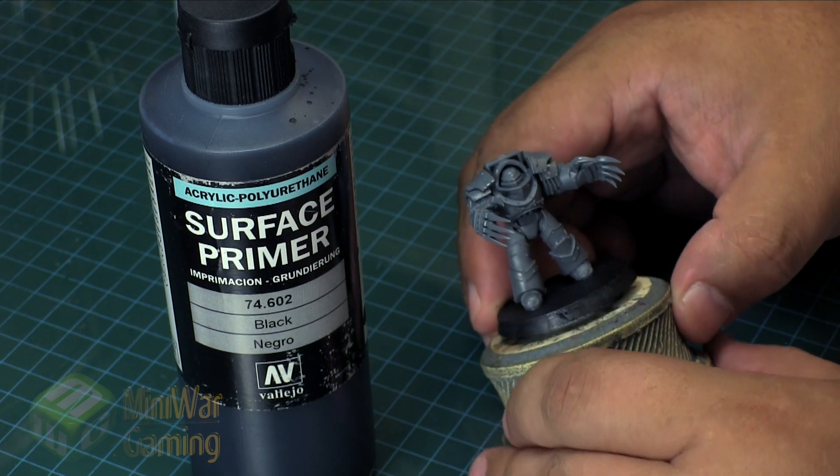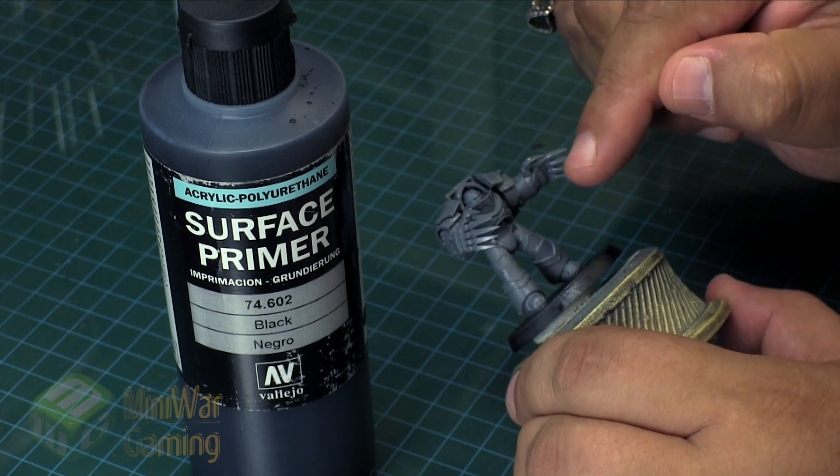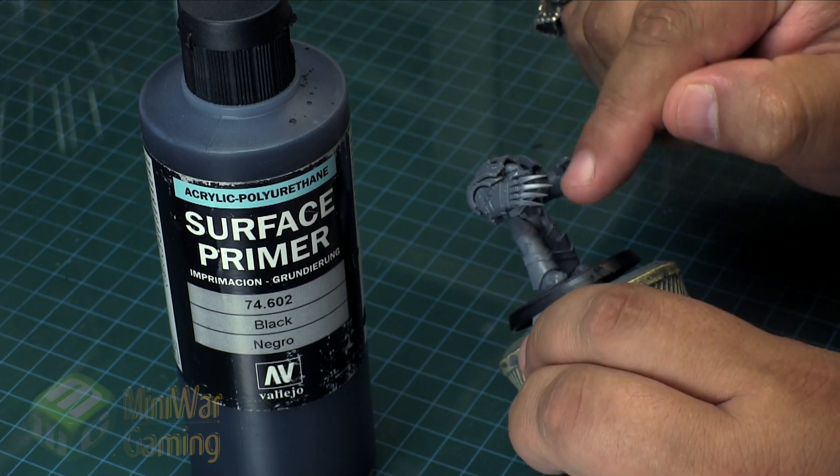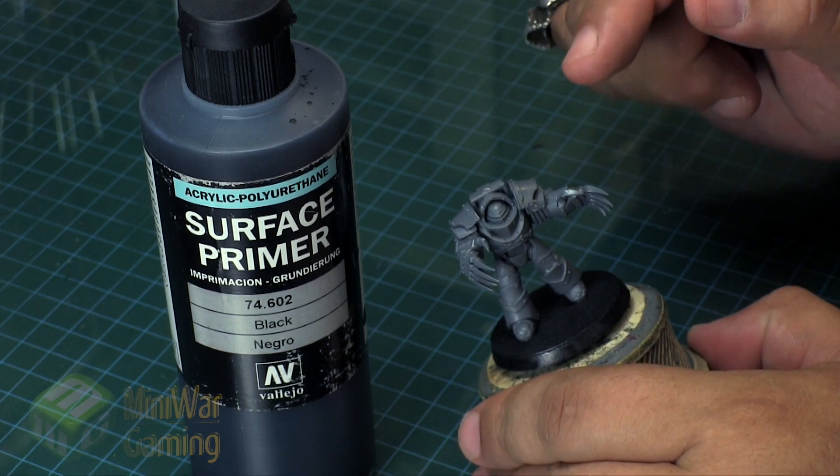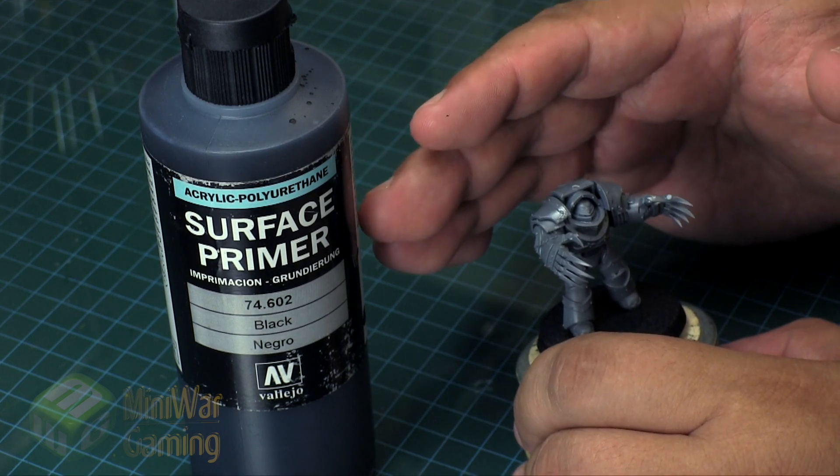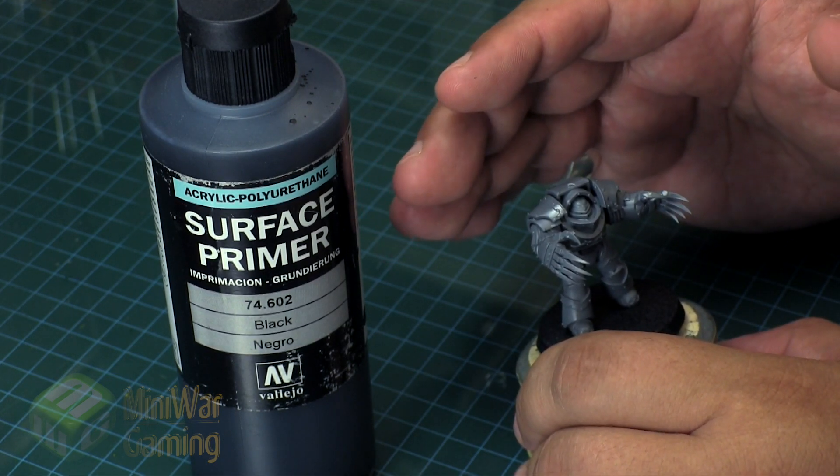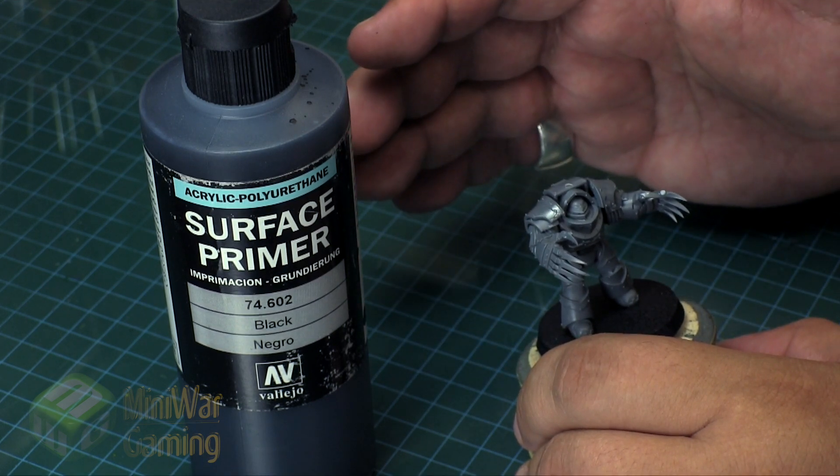When you have models like this with small surface details, embossing and things like that, you really do not want to lay too much primer down because you're going to obscure all those little details. That's one of the big dangers of over priming because primer tends to have a thicker body to it when it dries on a model surface.